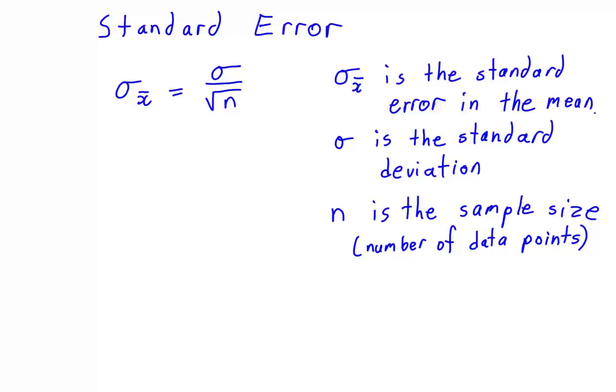This is a number which indicates how accurately we know the average of the data set. Just because a data set has got a large spread doesn't mean that we don't know what the average value is. So the standard error is the uncertainty in our average value.